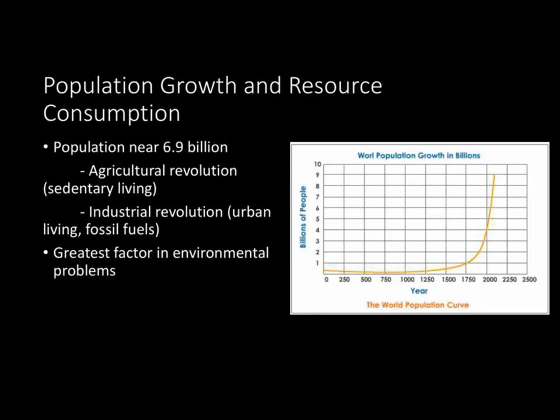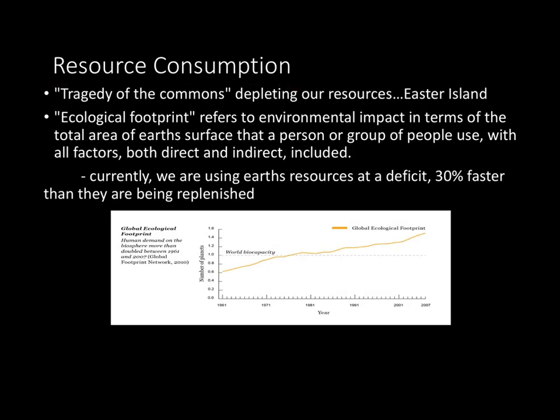Population is the single greatest factor in environmental issues. A main topic in environmental science is the tragedy of the commons, which basically means that a common resource that no one really owns is being depleted, and since nobody owns it, no one really takes care of it. A prime example comes from Easter Island, where it was a thriving population, but at one point they cut down all their trees, after which the population dipped and the entire civilization collapsed.